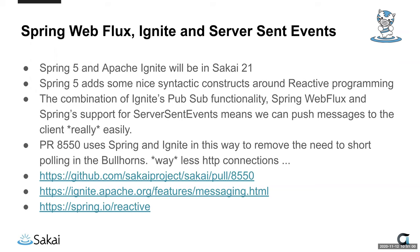This next slide is about Spring 5's reactive streams and event abstractions. Spring 5 has introduced nice syntactical constructs to help you work with reactive streams, and they've also added programming abstractions around services and events. I'm responsible for the bullhorns feature. One of the problems with bullhorns is it does lots of short polling — lots of institutions have used Sakai properties to increase the time interval between bullhorn polls, because every poll creates an HTTP connection with a put-up and tear-down.